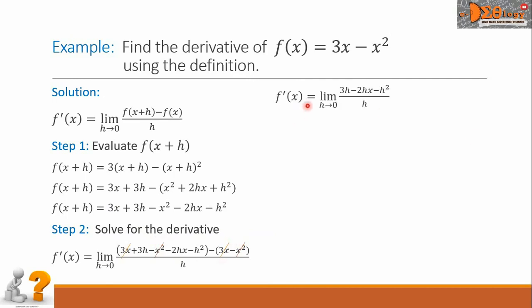Now, let us rewrite our limit in simplified form. So, we have f'(x) equals the limit of 3h minus 2hx minus h squared, all over h, as h approaches 0. Observe again that in our numerator, there is a common factor, which is h. Let us factor it out. So, we have now h times the quantity 3 minus 2x minus h, all over h. So, we can cancel this h in the denominator, and that common factor.